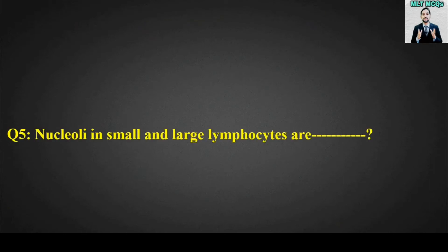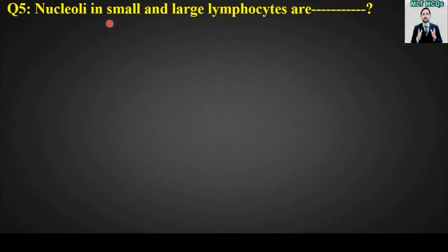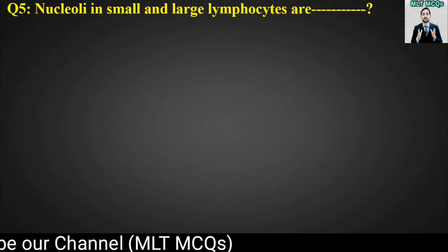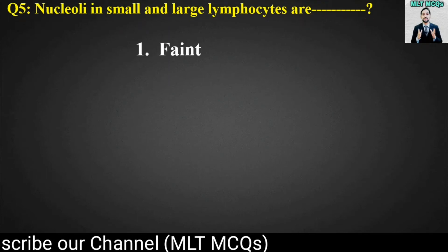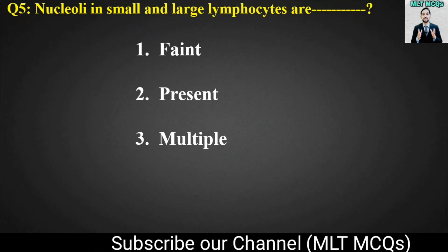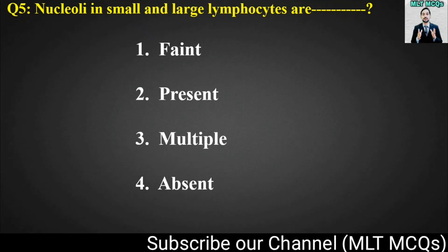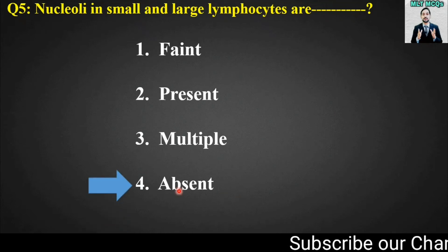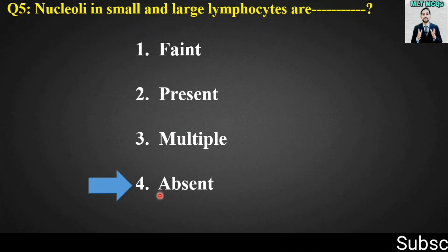MCQ number five: nucleoli in small and large lymphocytes are blank. Options are faint, present, multiple, or absent. The right answer for this MCQ is option number four. Nucleoli in small and large lymphocytes are absent.